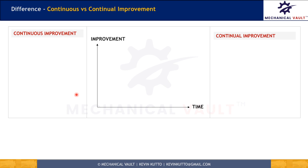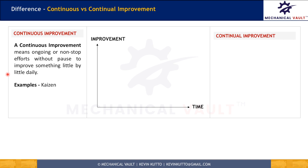Let's begin with our first term which is continuous improvement. A continuous improvement is an ongoing or non-stop effort in the development of services, processes, products, or our self-development. In continuous improvement, the next improvement activity begins the moment the first gets over without any pause, as shown here. So we have time and improvement, and as you can see, this is continuous in nature.